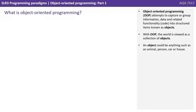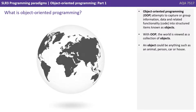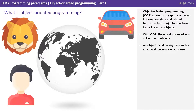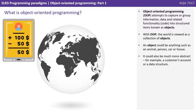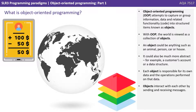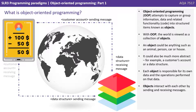Object-oriented programming, or OOP, attempts to capture or group information, data, and related functionality into structured items known as objects. With OOP the world is viewed as a collection of objects. An object could be anything such as an animal, a person, a car, or a house. It could also be more abstract, for example a customer's account or a data structure. Each object is responsible for its own data and the operations performed on that data. Objects interact with each other by sending and receiving messages.